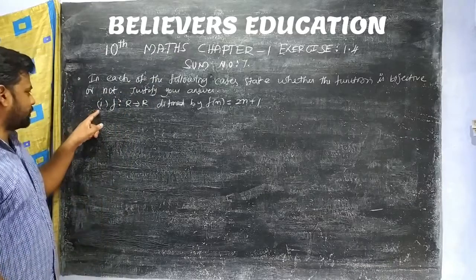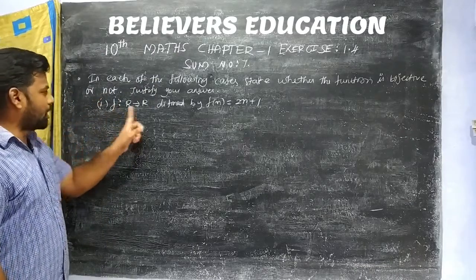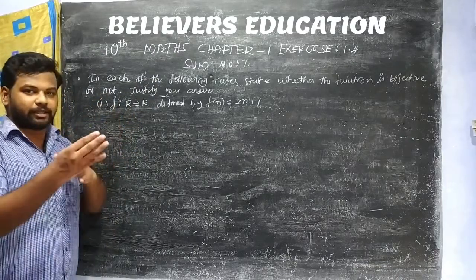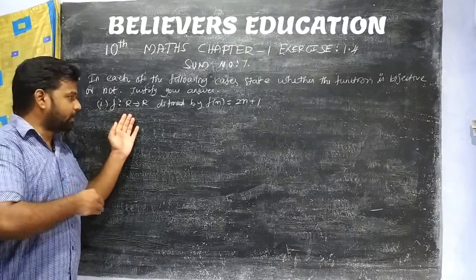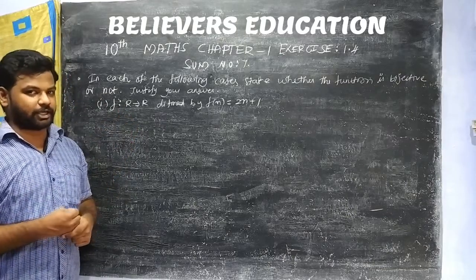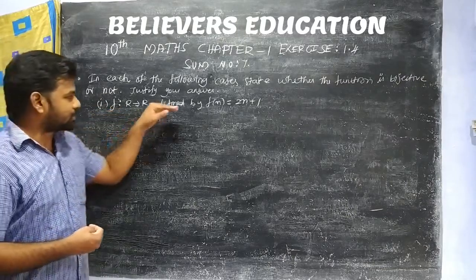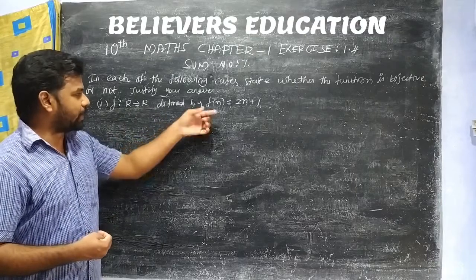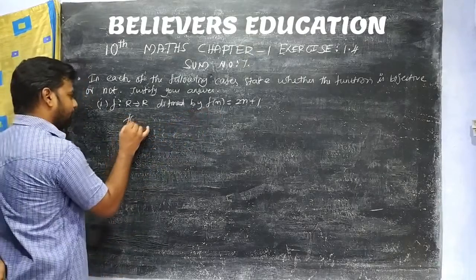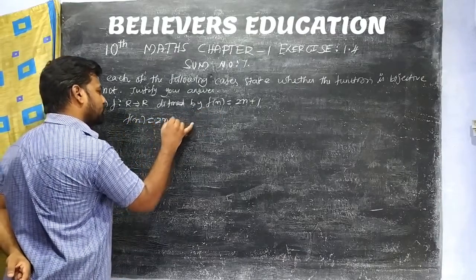First question: F is from R to R. We have a real number to real number function. F is equal to 2x plus 1.